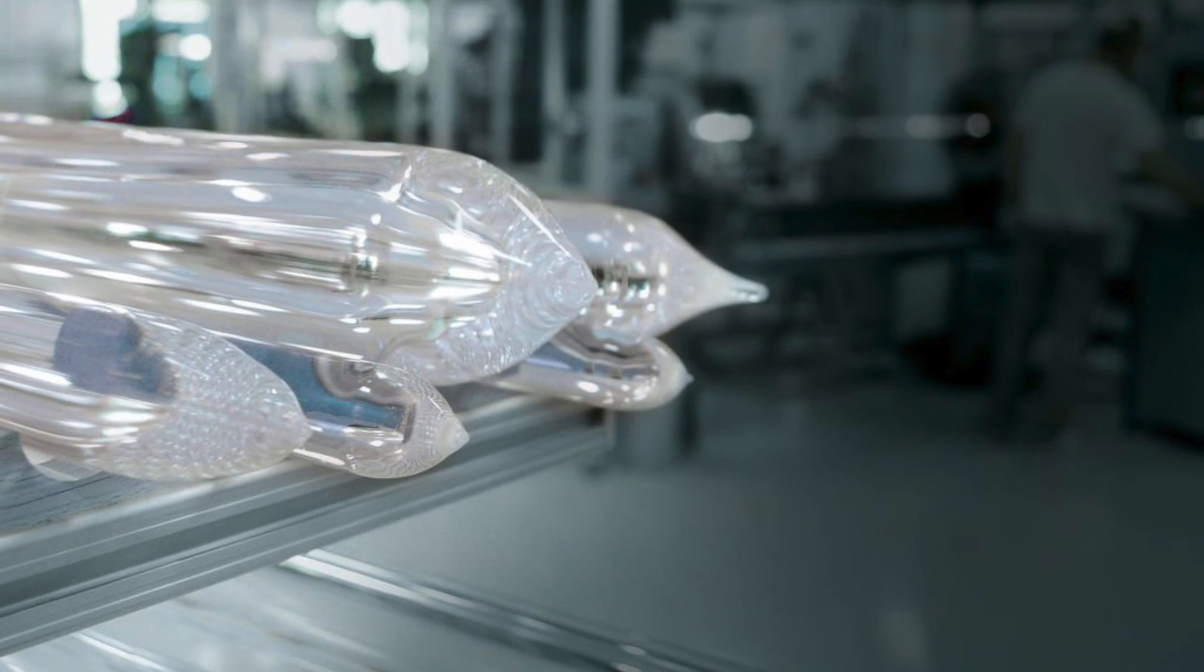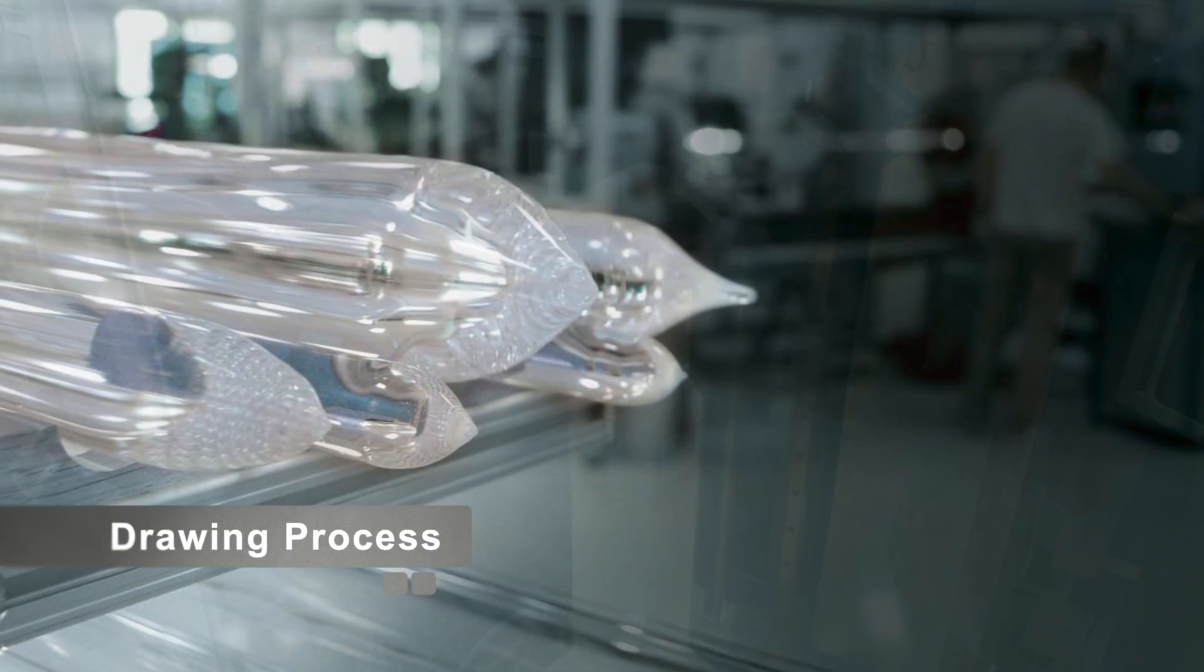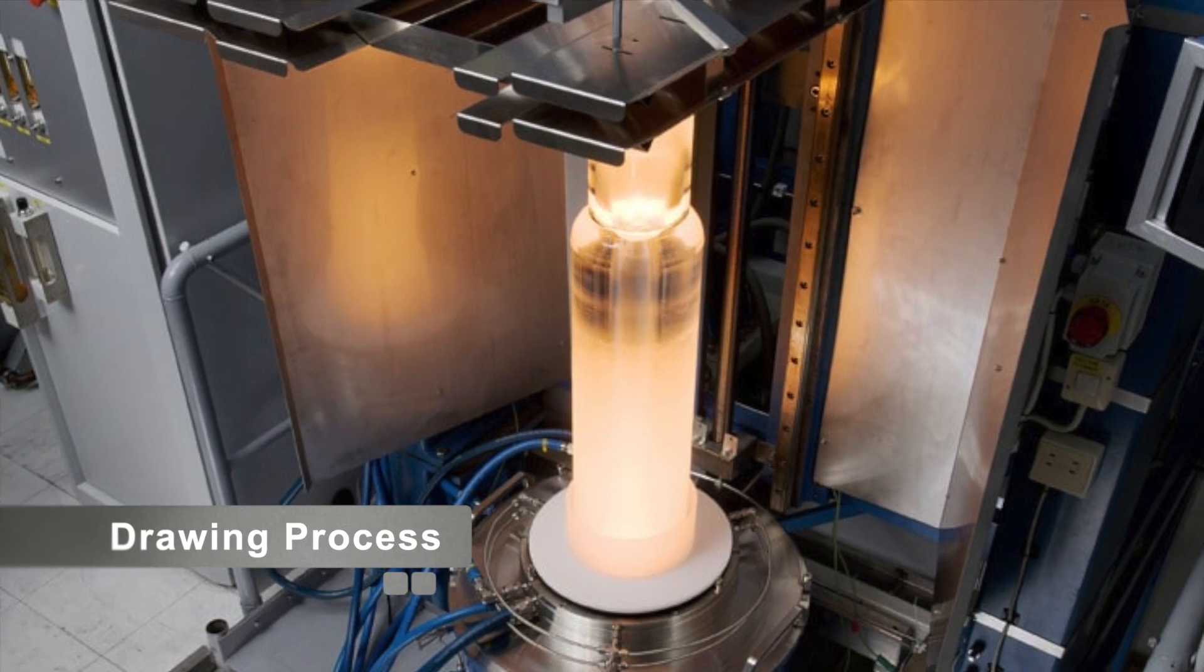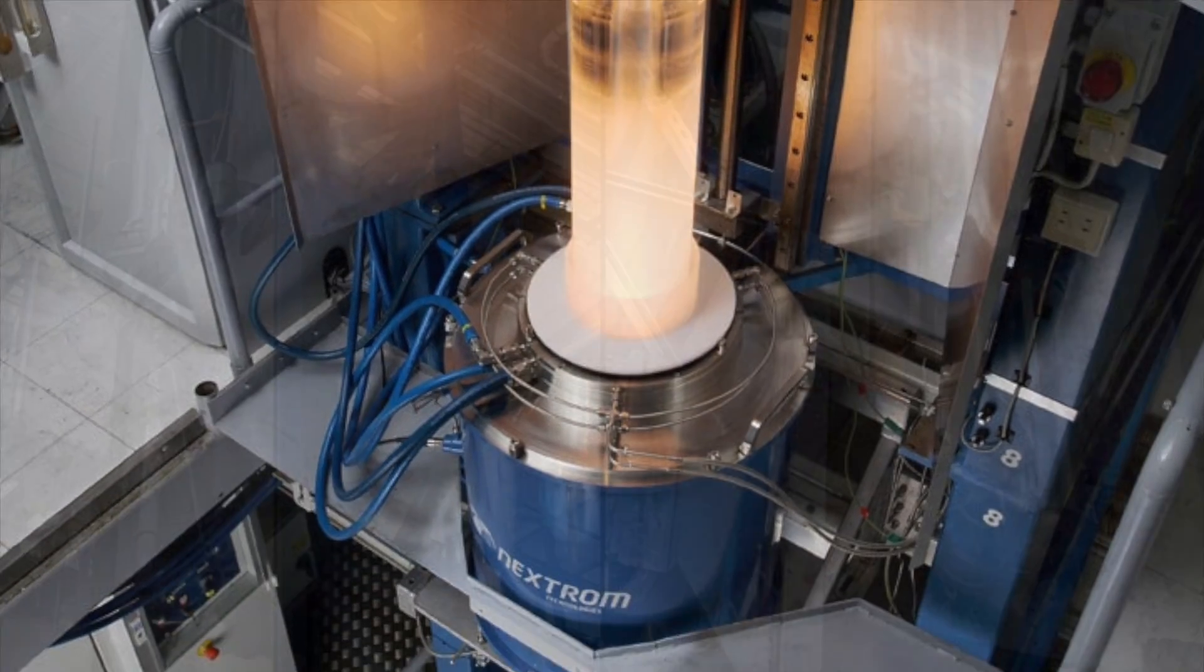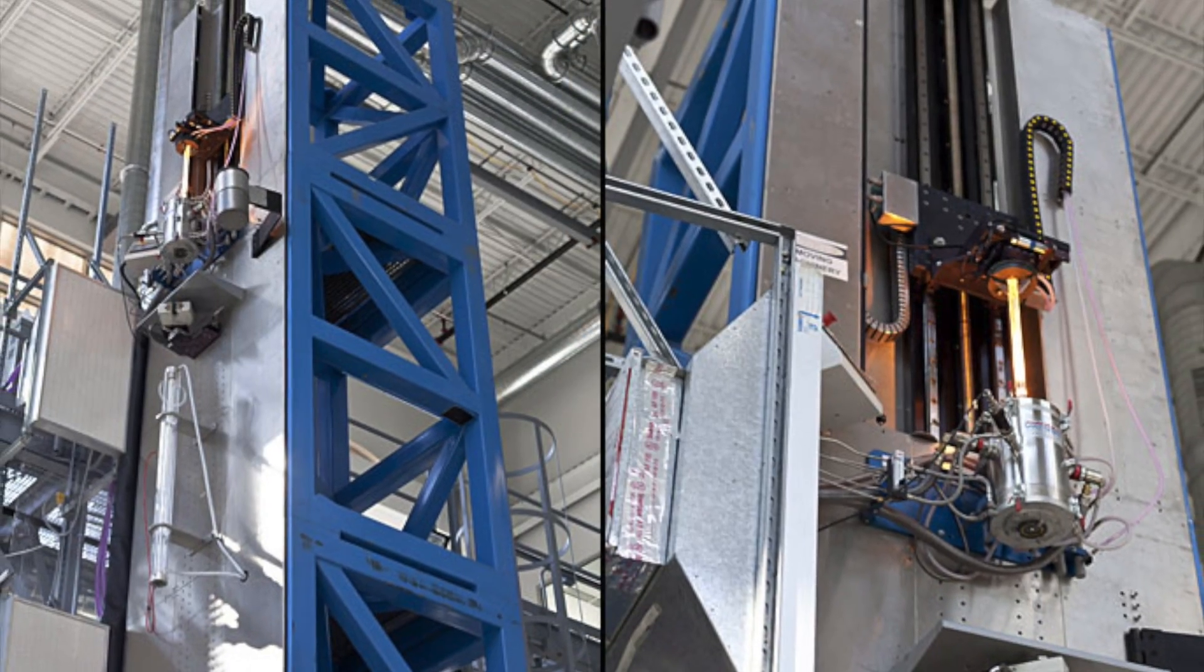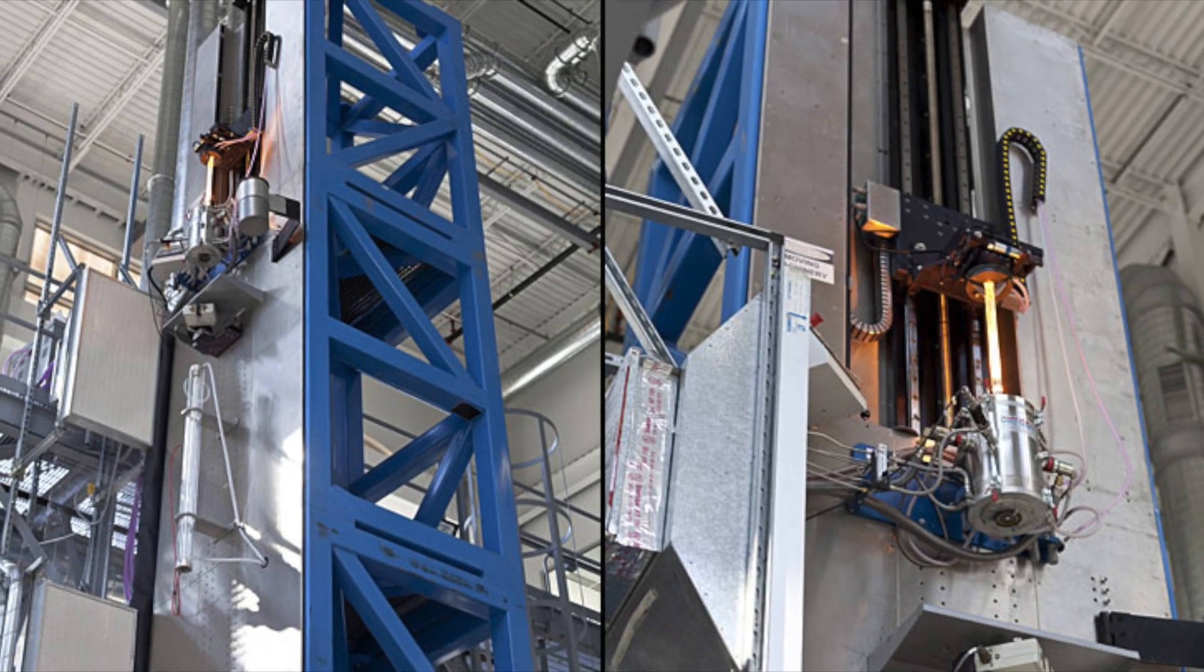Once the preform is ready, it's time for the drawing process. The preform is placed in a drawing tower, where it's heated to about 2000 degrees Celsius. As the bottom of the preform melts, it forms a molten drop that is pulled downward by gravity.